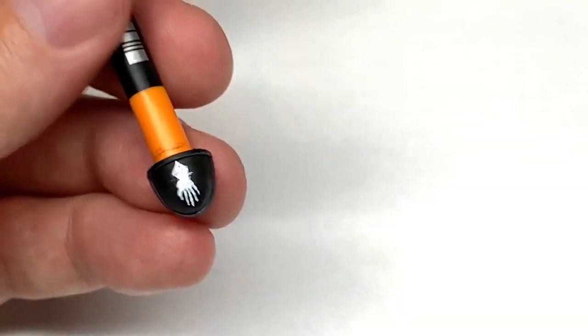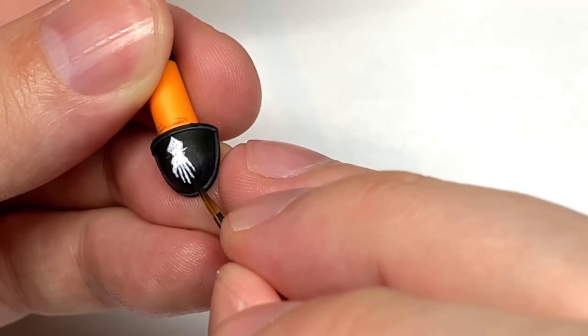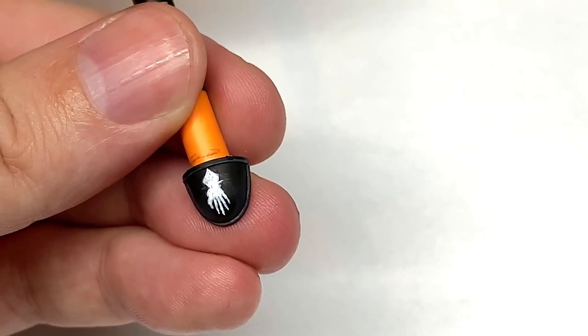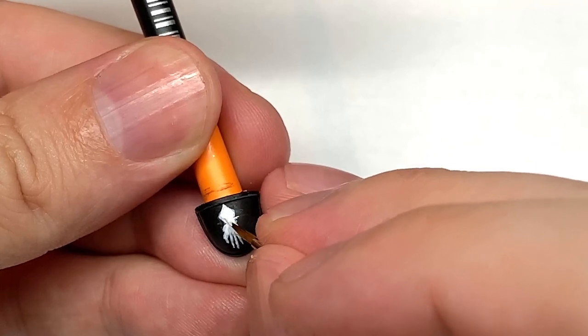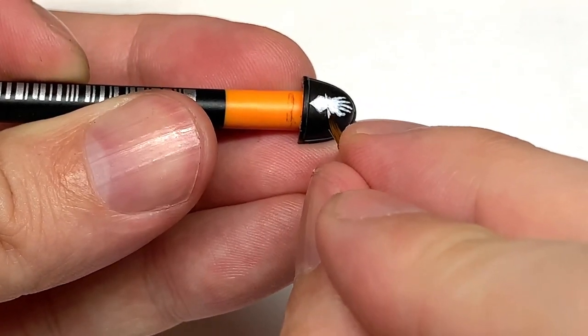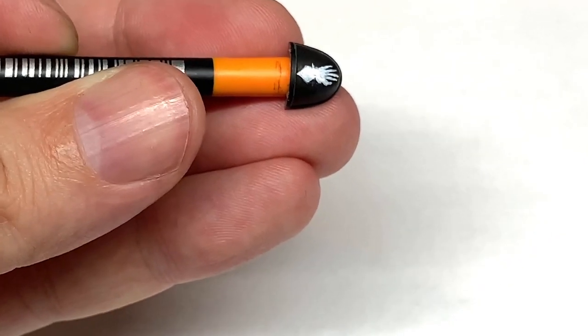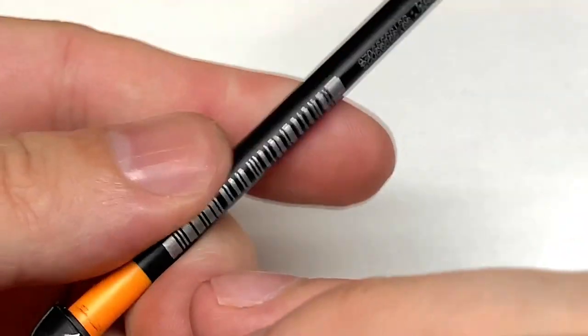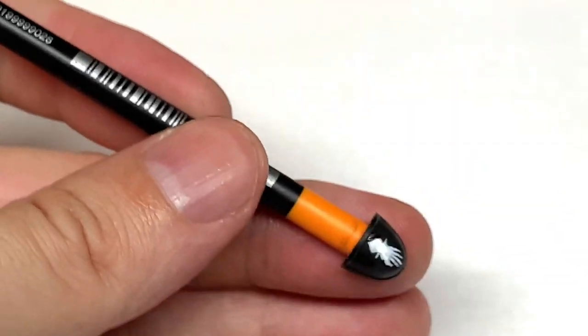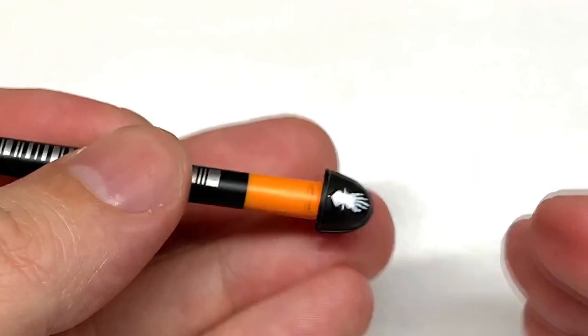So while I'm doing this I've got a black and white image of the Ironhands chapter badge up on screen and I'm sort of looking at where the fingers are and where those steps are and trying to get them as close to the image as I can. With the symbol being so small on the shoulder pad it can be quite tricky getting those fingers and the little steps in the fingers on there.